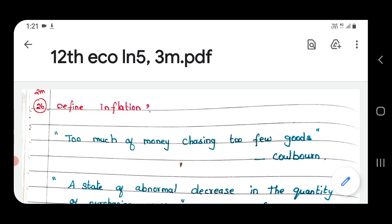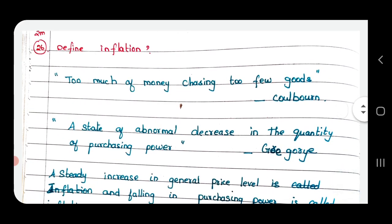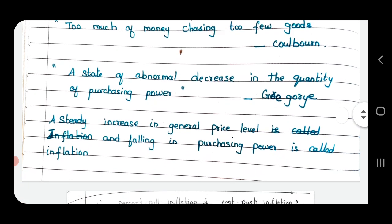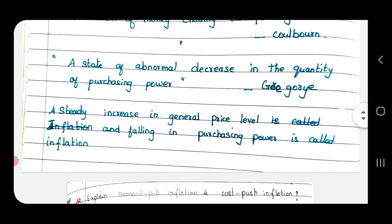Define inflation. Too much of money chasing too few goods. Next definition: A state of abnormal decrease in the quantity of purchasing power. A steady increase in general price level and falling in purchasing power is called inflation.